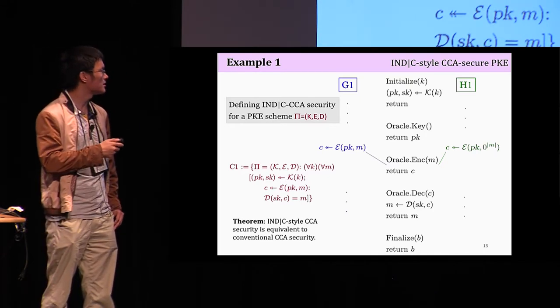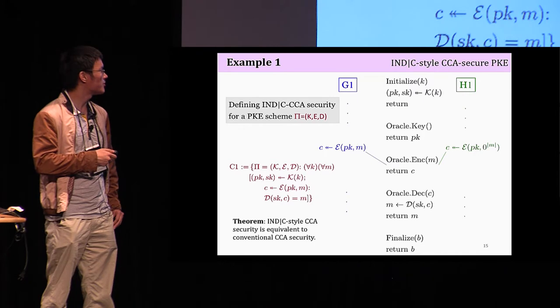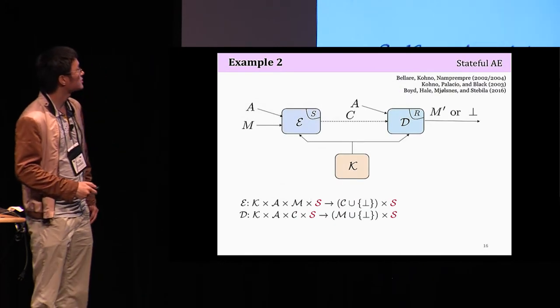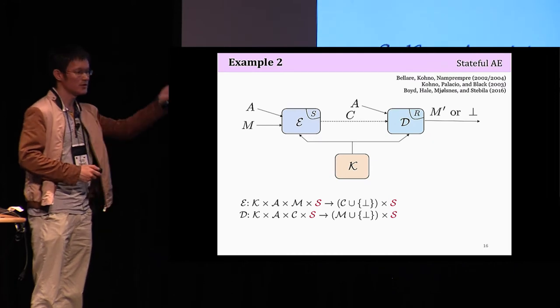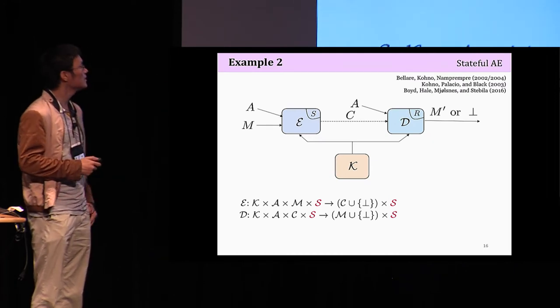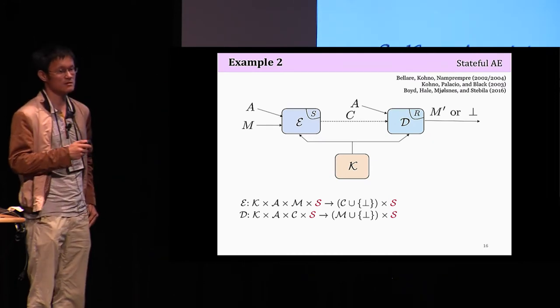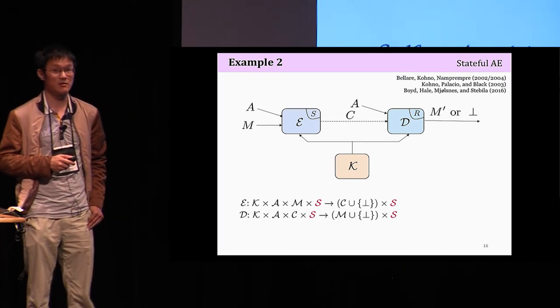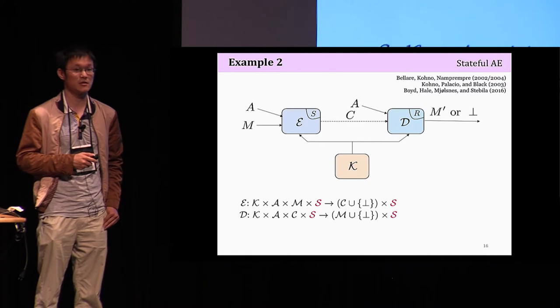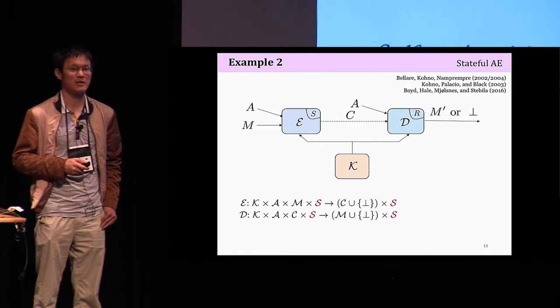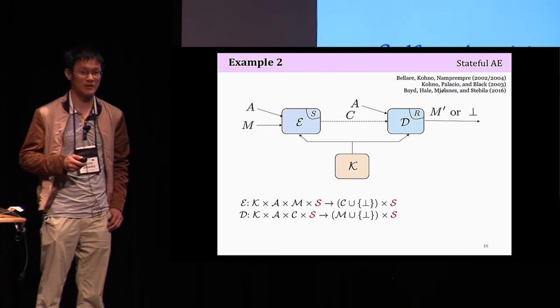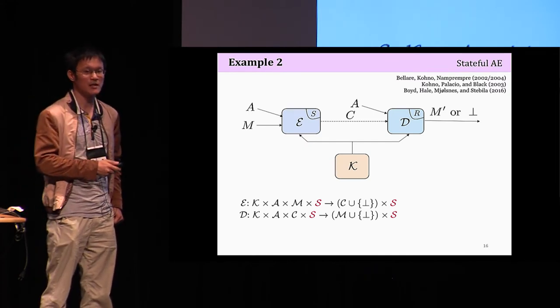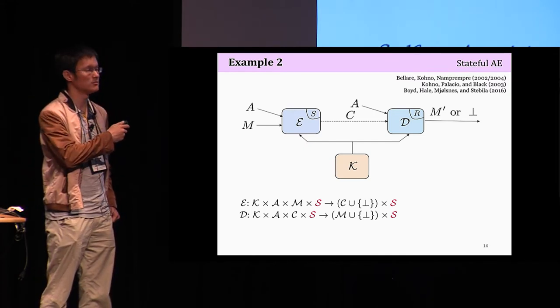Okay, you might say this doesn't look very promising. You only managed to remove two lines of code. So let's go to our main example of stateful authenticated encryption. There have been many prior work on this. I've listed three of them. As you might imagine, they tend to have different syntax, different security goals, and they have relatively complex security games. That's most important. So let's try to use INDIC on stateful authenticated encryption.